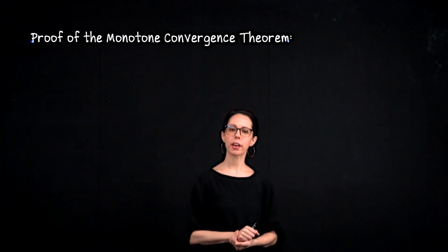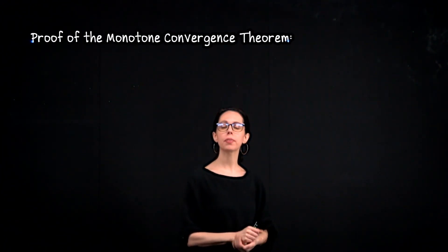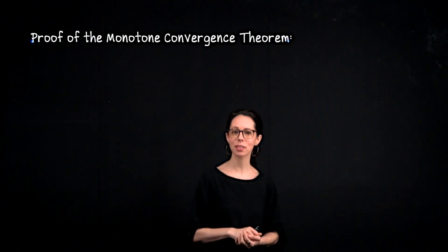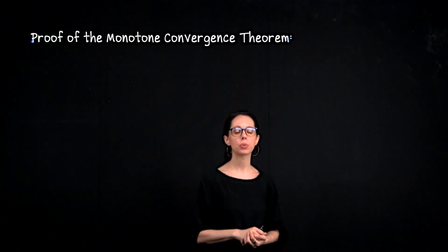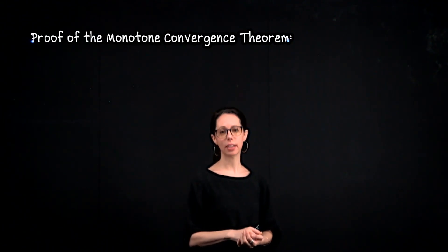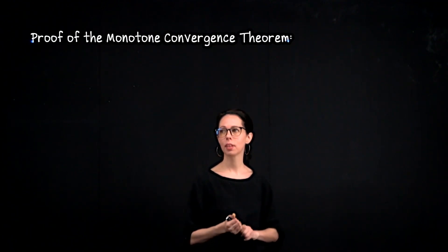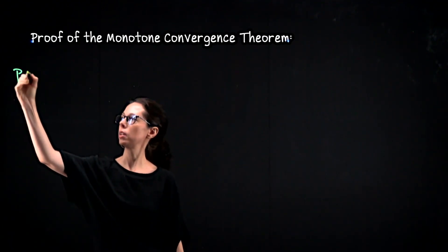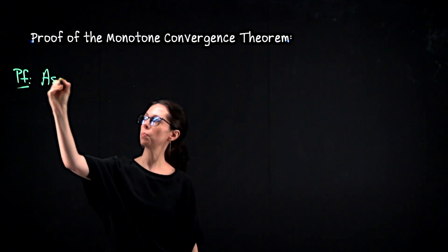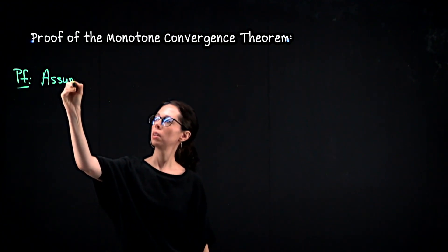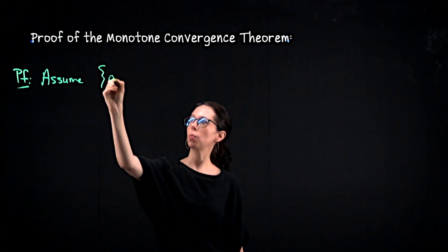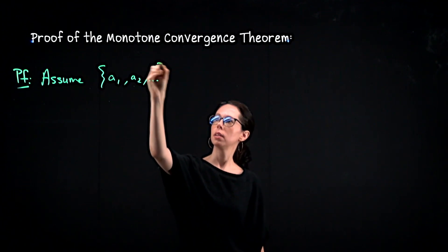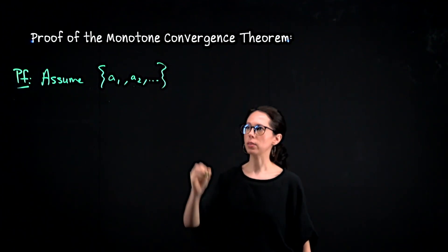Let's prove the monotone convergence theorem for the case of a monotone increasing sequence. I'll leave it to you to adjust the proof in case the sequence is decreasing. Assume that the sequence a1, a2, … is monotone increasing and bounded.